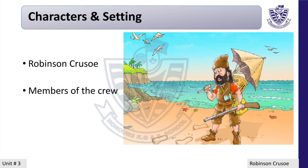Characters and Setting. Students, the main characters in this novel are Robinson Crusoe and members of the crew. Setting: The time and location in which a story takes place is called Setting. Students, the main incident in the novel took place on an island. You can see the image of the island on your book, page number 29.